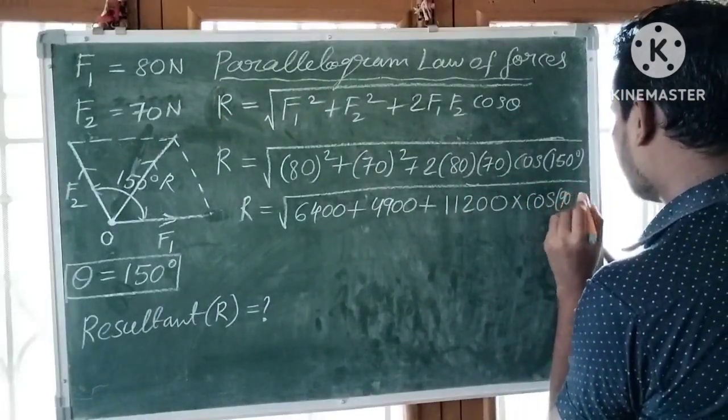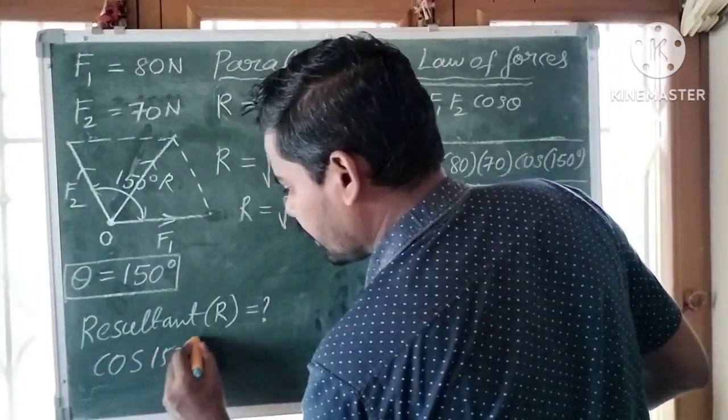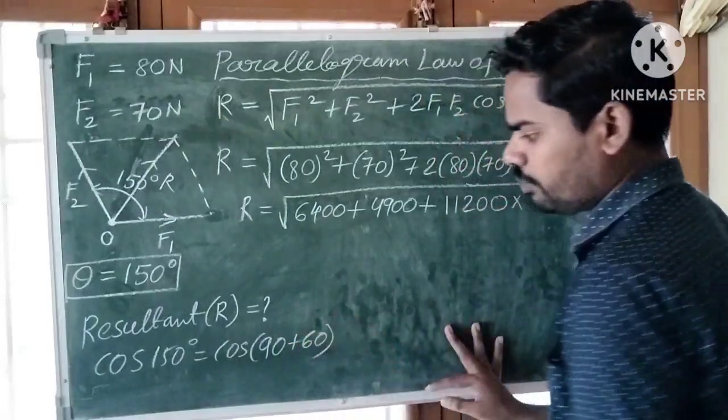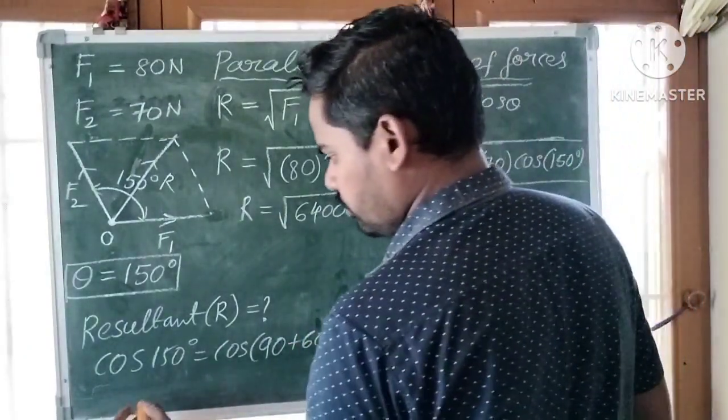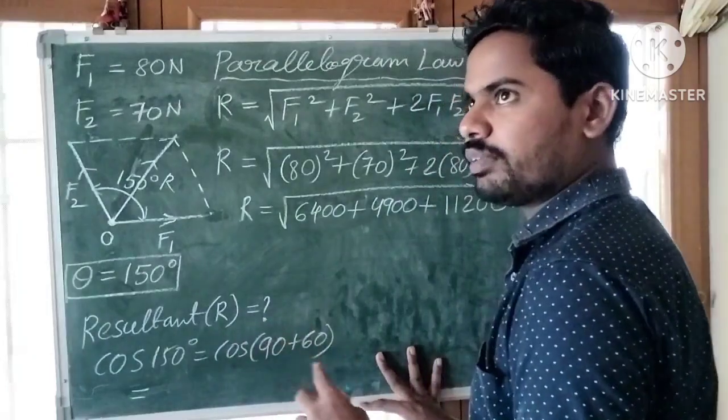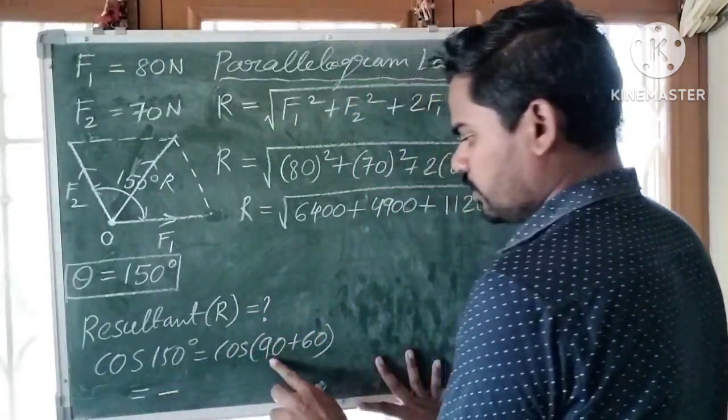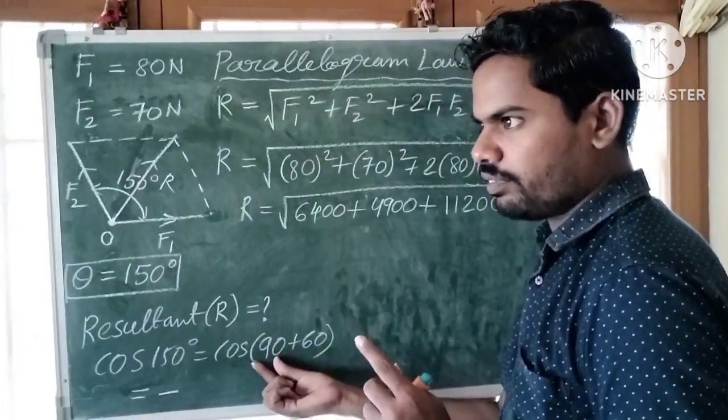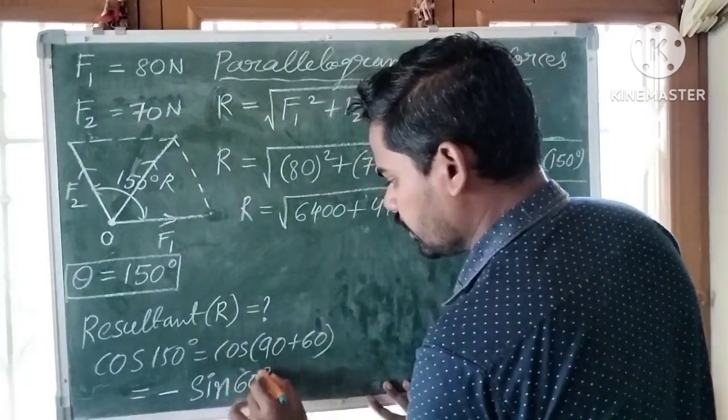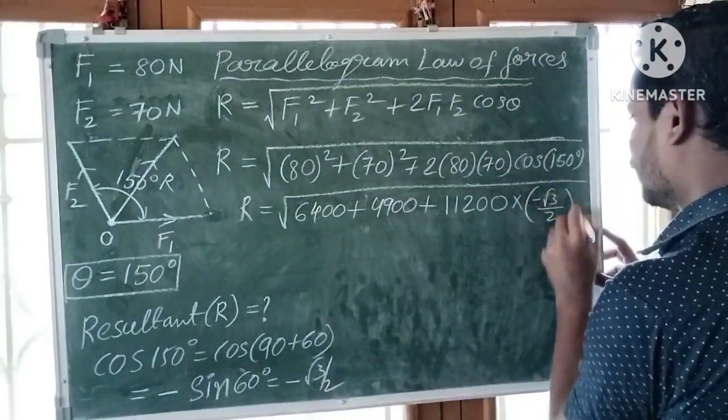Cos 150 can be written as cos 90 plus 60 or 180 minus 30. Cos 90 plus theta, second quadrant. All silver teacups, second quadrant cos negative. So 90 is odd multiple of 90, cos becomes sine 60. Minus sine 60 degrees, sine 60 is root 3 by 2. This value is minus root 3 by 2.